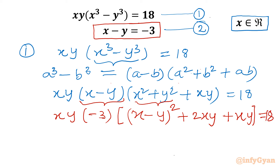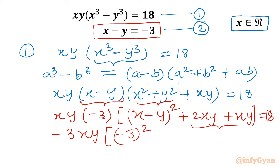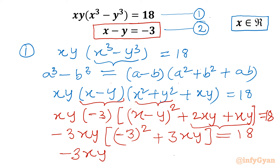So we have -3xy times [(-3)² + 2xy + xy] = 18, which simplifies to -3xy times [9 + 3xy] = 18.